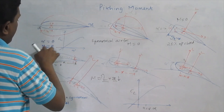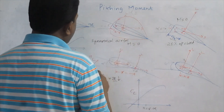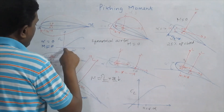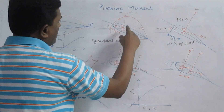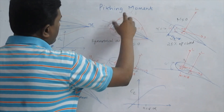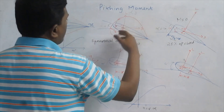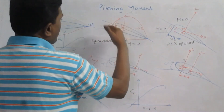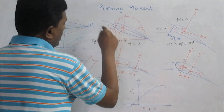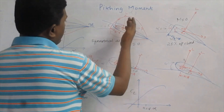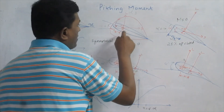As the angle of attack increases, the lift also increases, as we observe on the CL versus alpha curve. But the center of pressure does not change with the increase in angle of attack, because the distributed forces also increase in the same proportion. So because of that reason, the center of pressure does not move away from the aerodynamic center. The Pitching Moment remains zero for the symmetrical aerofoil in this position.